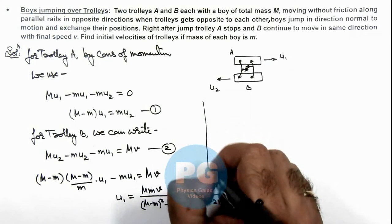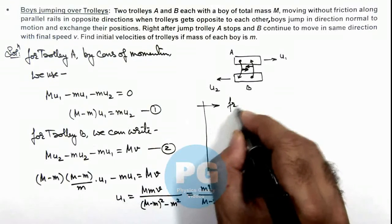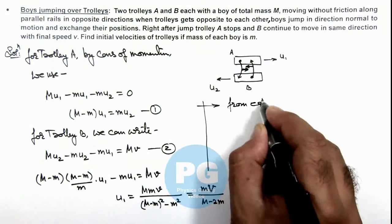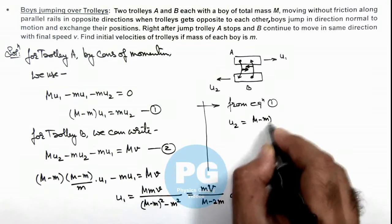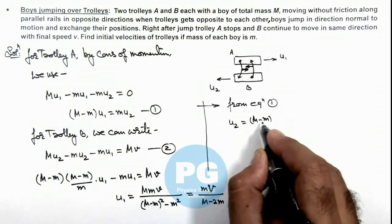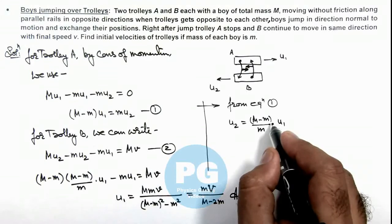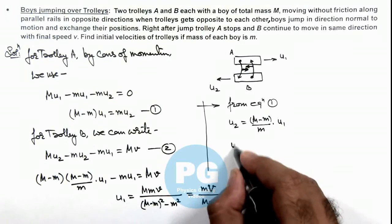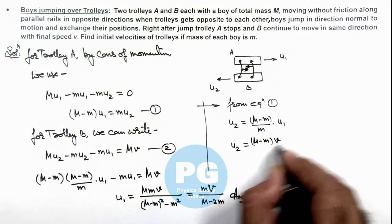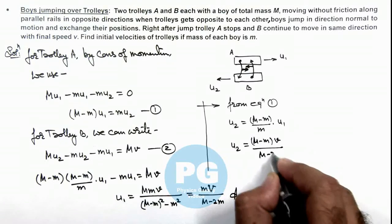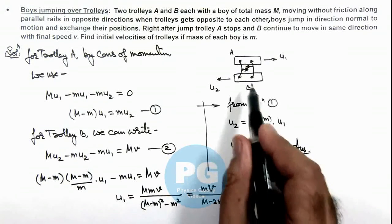And here if we continue from equation 1, we can write the value of u2 is equal to (M-m) divided by m times u1. So this u1 we can substitute over here. So this u2 we are getting (M-m) multiplied by v divided by (M-2m). This is another answer for the problem, the velocity of trolley B before jump.